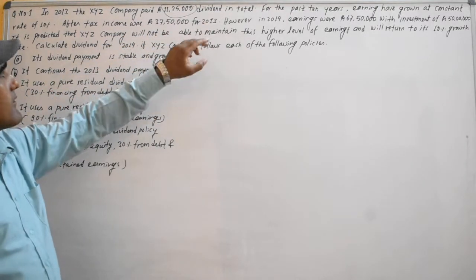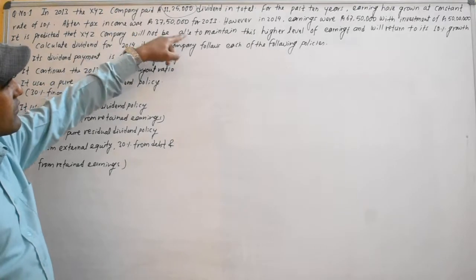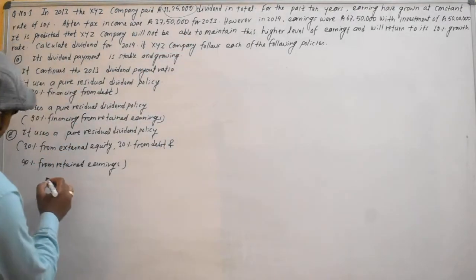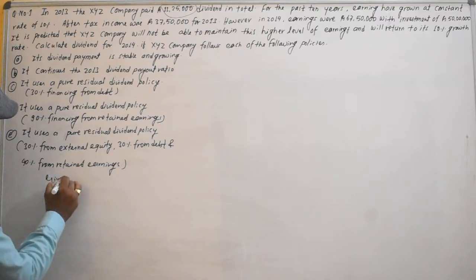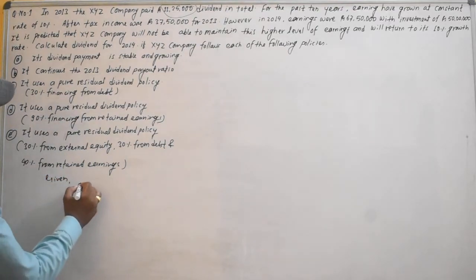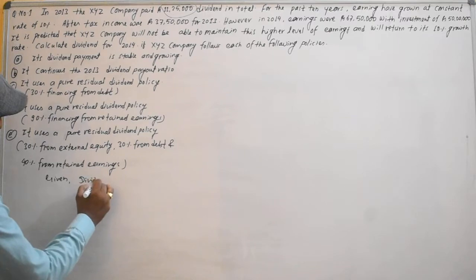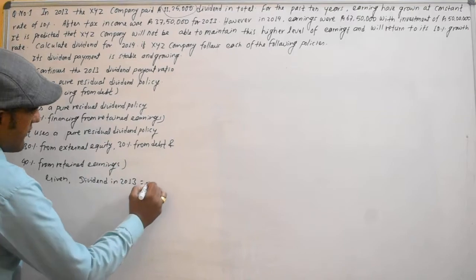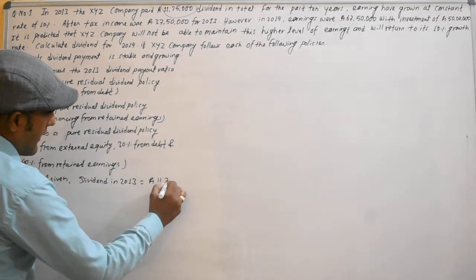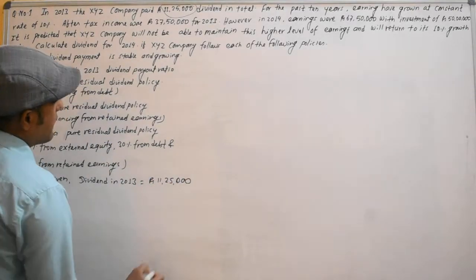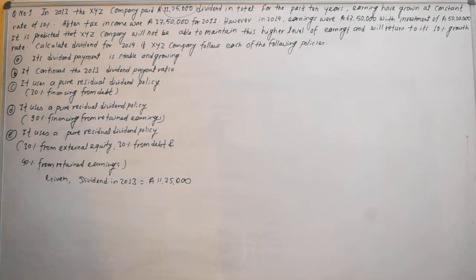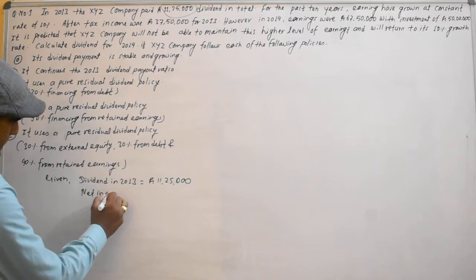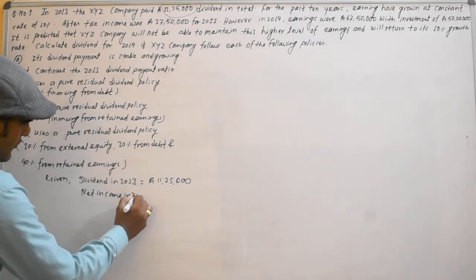In 2013, the dividend is Rs. 1,20,000, making total dividends Rs. 11,20,000. After savings, it is now 1,20,000. The tax rate and net income for 2013 are used to calculate the base figures.